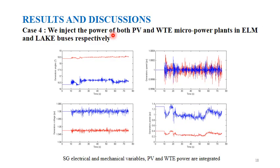The last case is when we inject the power of both the PV and wind turbine emulator micropower plants at the element and lake buses respectively. It is clear that the disturbances generated by the intermittent injected powers propagate rapidly to the grid, affecting both generators. The power system stabilizers present a fast reaction to power mismatch, keeping voltage and speed at their nominal values for each disturbance. Comparing cases 2, 3, and 4, we conclude that it is not the quantity of injected power that causes important disturbances, but rather the sudden increases or decreases. In case 4, the disturbances are the same as in case 3; however, the power generated from both synchronous generators is reduced much more in case 4 compared to cases 2 and 3.